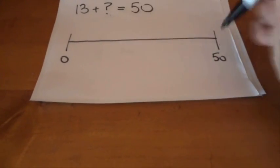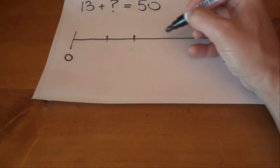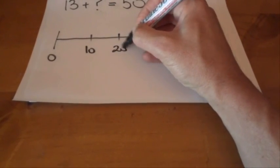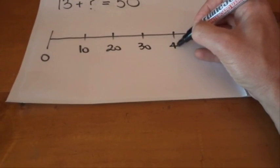So what we want to do is mark the line at 10, 20, 30, and 40. Make those relatively evenly spaced.